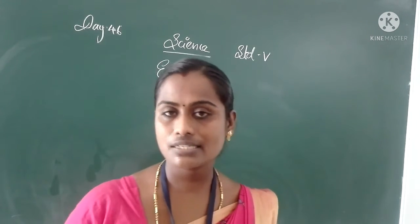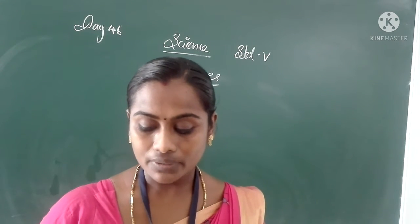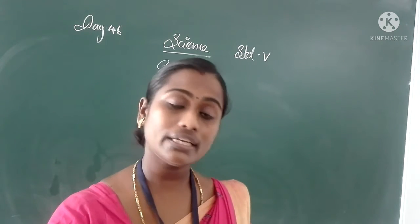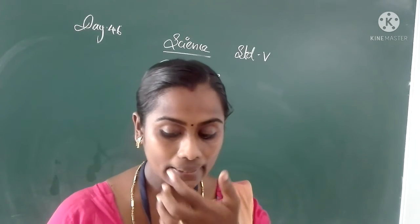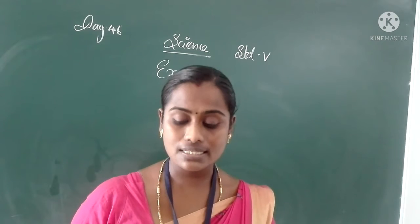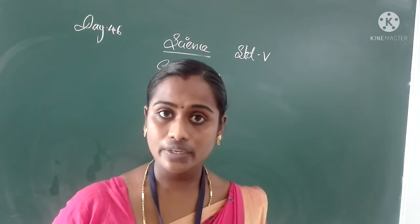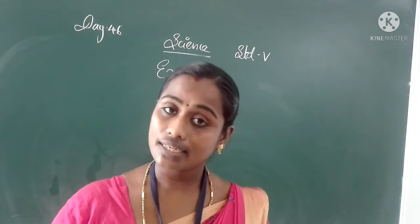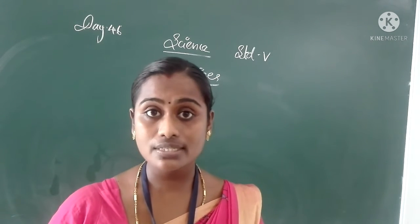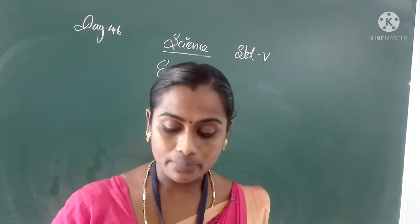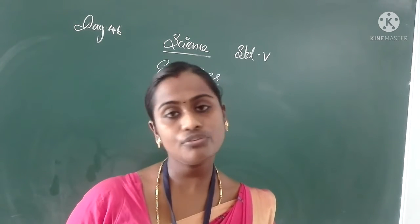Questions and answers. First: what is air composed of? Air is composed of various gases — oxygen 21%, nitrogen 78%, carbon dioxide 0.03%, and some other gases in very small amounts.